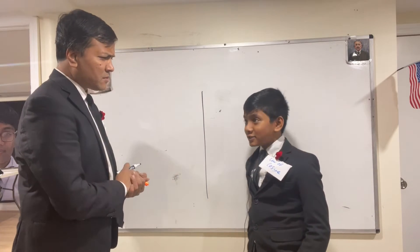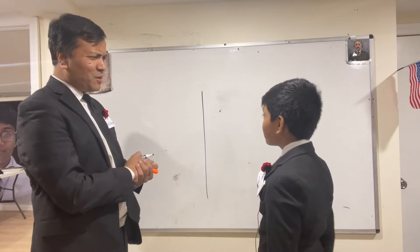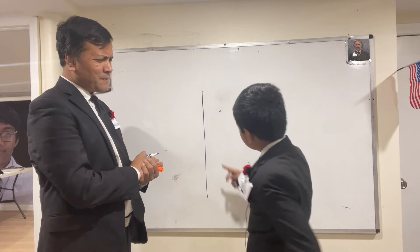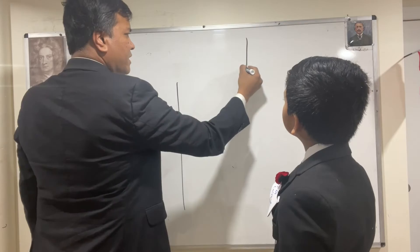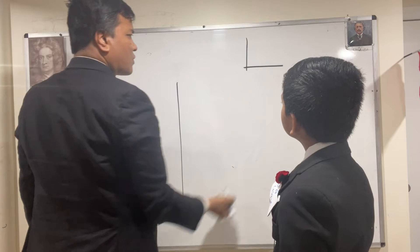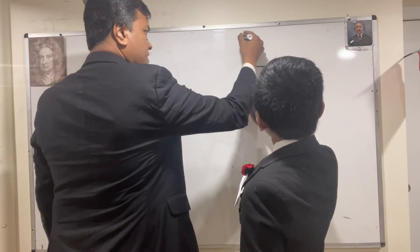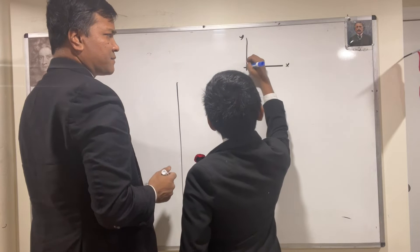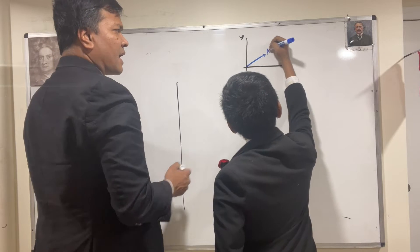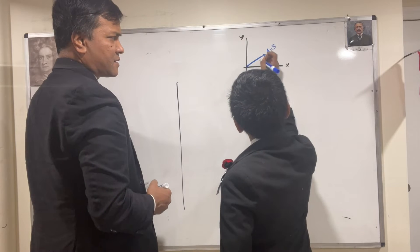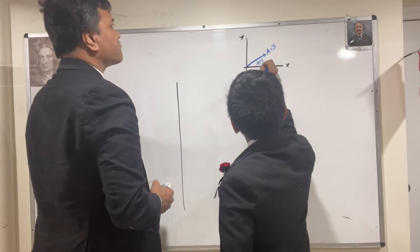Alright, let's understand the sourdough bread. Can you think of any example we can use? Can you draw the coordinate axes? So we have, let's say, two vectors. So we have our first vector, A, which has a magnitude of three and is 30 degrees to the horizontal.